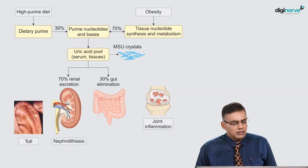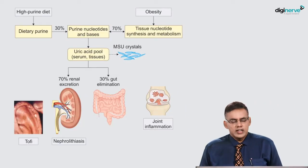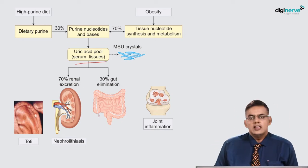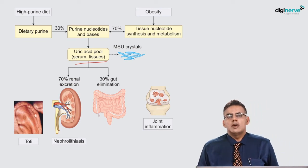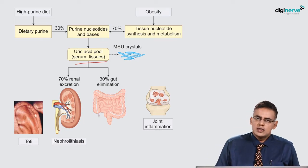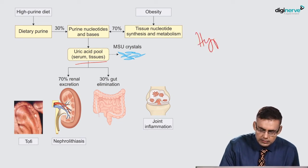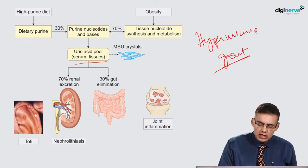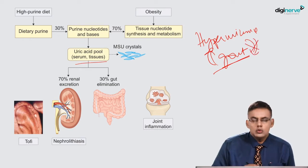Whenever we take a high purine diet, it contributes to purine nucleotides and bases in the blood, and they ultimately get settled in the serum and tissues. Not all patients who have hyperuricemia will have gout — only those with a predilection to develop it. Patients with gout do have hyperuricemia, but all patients with hyperuricemia do not get gout.